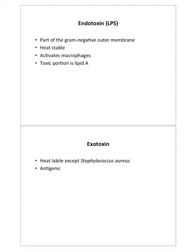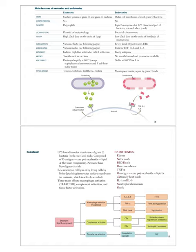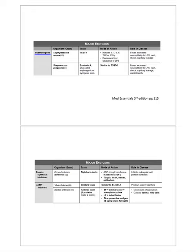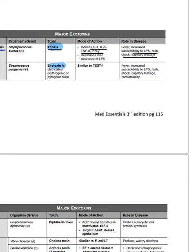Endotoxin is part of the gram-negative outer membrane — the lipopolysaccharide component. Super antigens massively stimulate cytokine release. Two key super antigens: Staphylococcal TSST (toxic shock syndrome toxin) and Streptococcal erythrogenic/pyrogenic exotoxin A. These induce IL-1, IL-6, interferon-alpha and gamma, leading to massive cytokine release causing capillary leakage, shock, and rash.